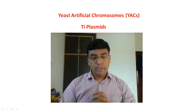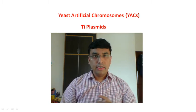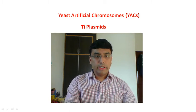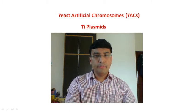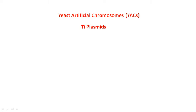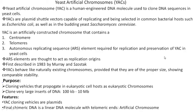First I would like to explain about YAC, that is yeast artificial chromosome. This yeast artificial chromosome is a shuttle vector. It can be used to clone or to express the protein in two systems — yeast and bacteria. The yeast artificial chromosome is a human-engineered DNA molecule used to clone DNA sequences in yeast. It is a shuttle vector capable of replicating in both bacteria like E. coli as well as in yeast like Saccharomyces.